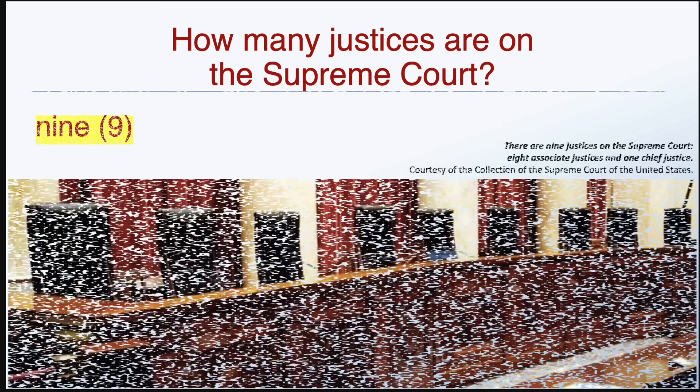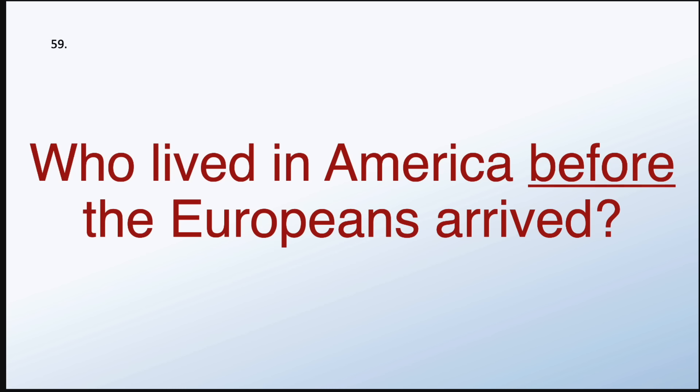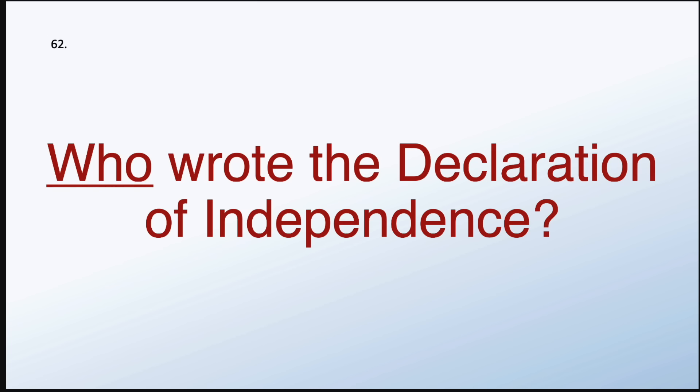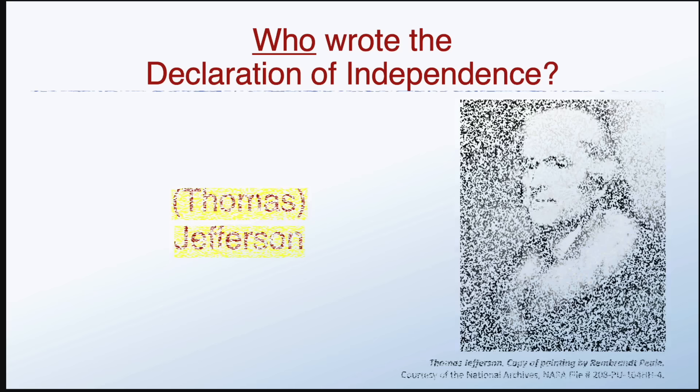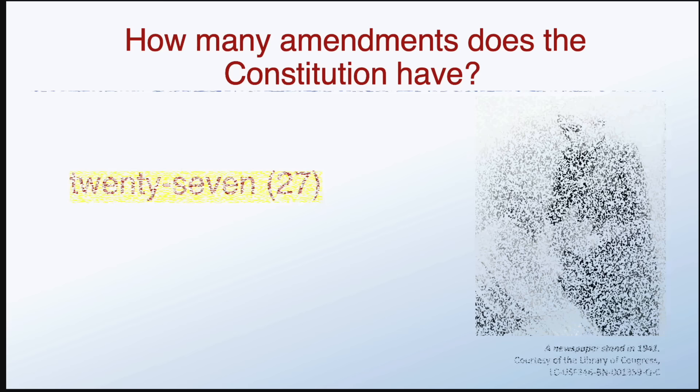What did the Emancipation Proclamation do? Freed the slaves. Who lived in America before the Europeans arrived? American Indians. Who wrote the Declaration of Independence? Thomas Jefferson. How many amendments does the Constitution have? Twenty-seven.